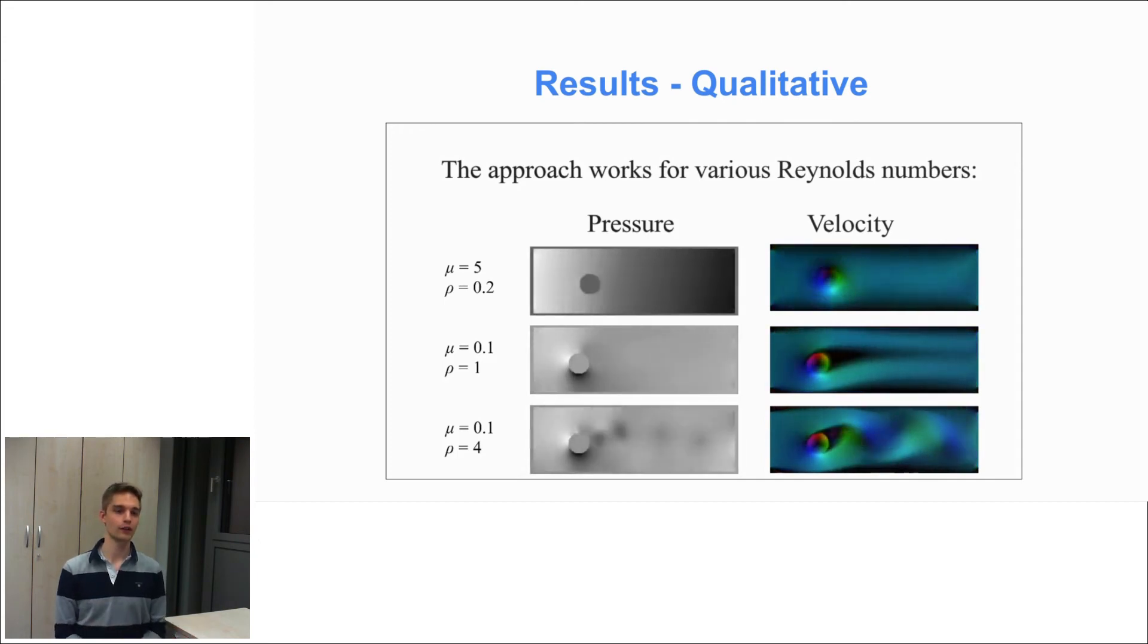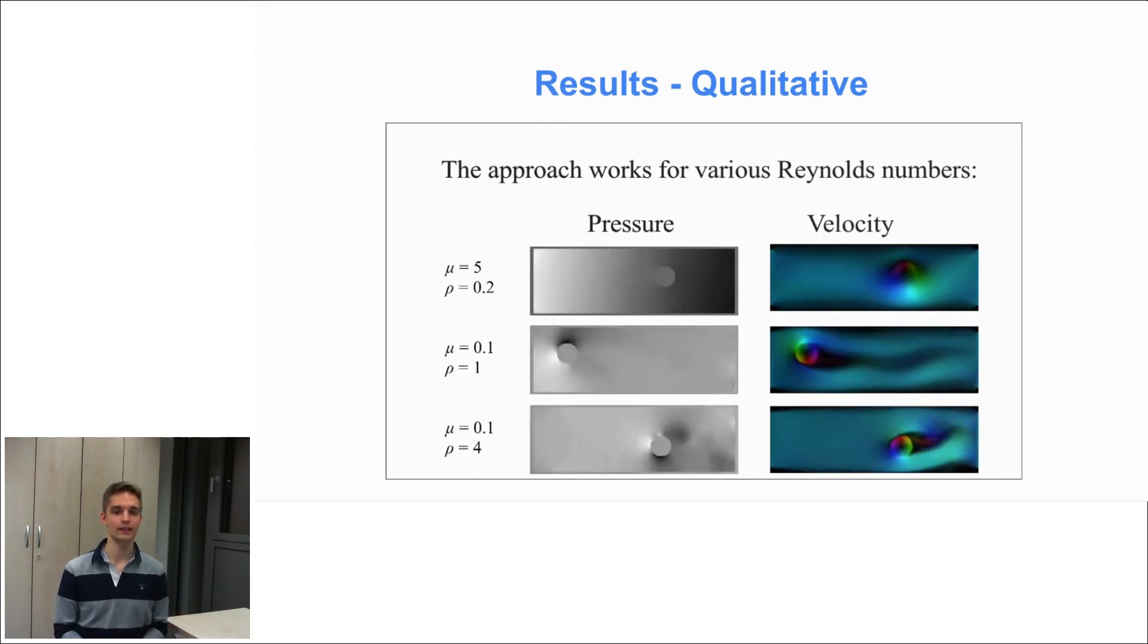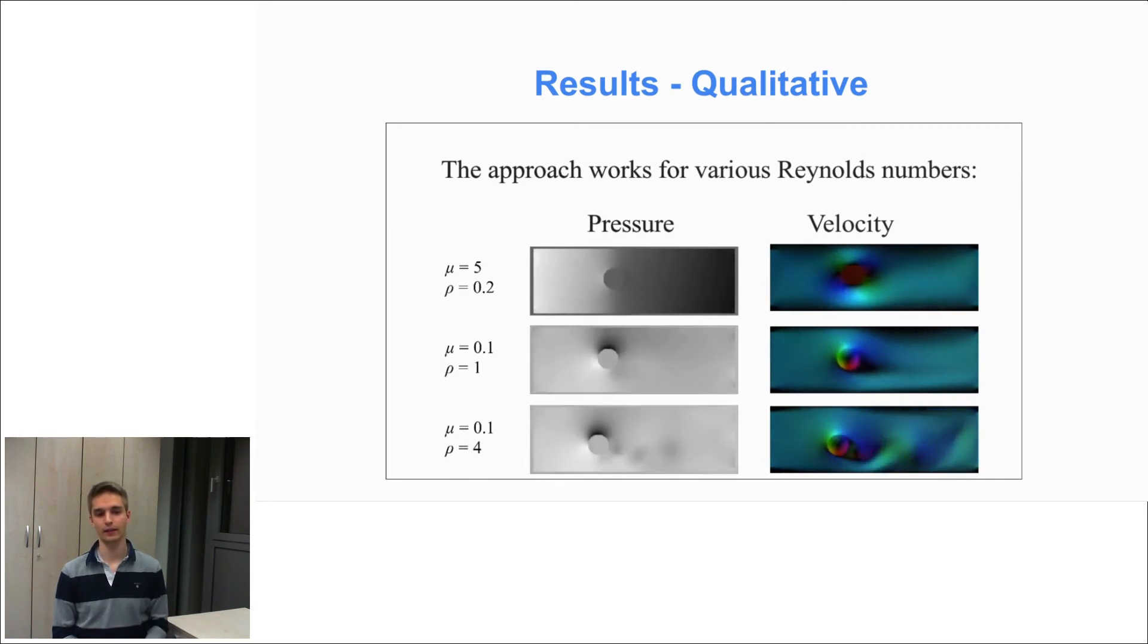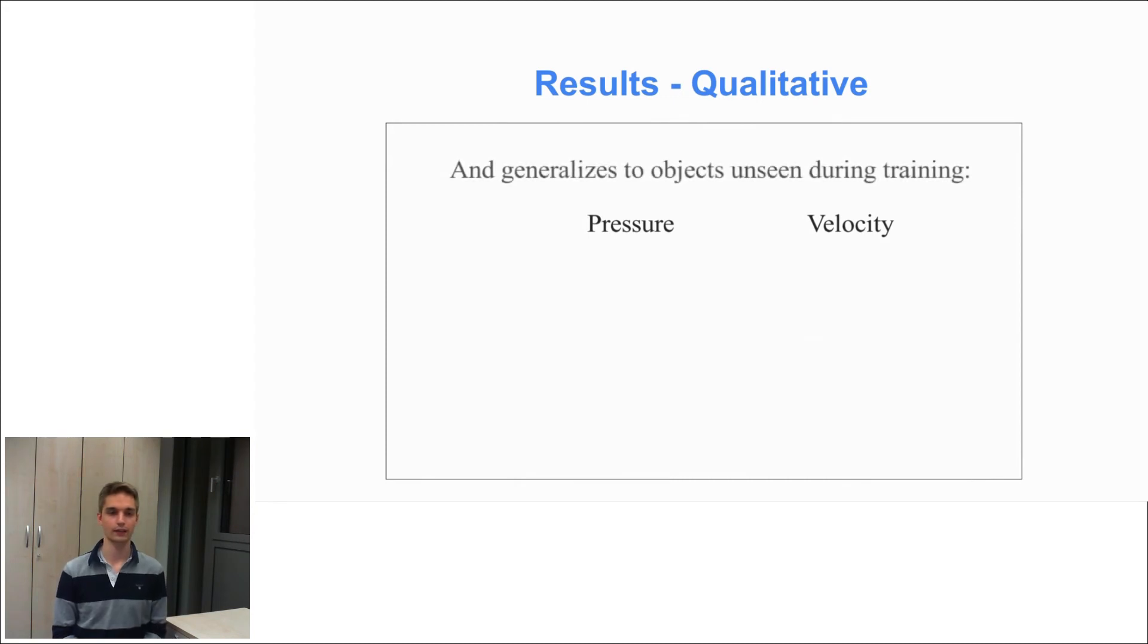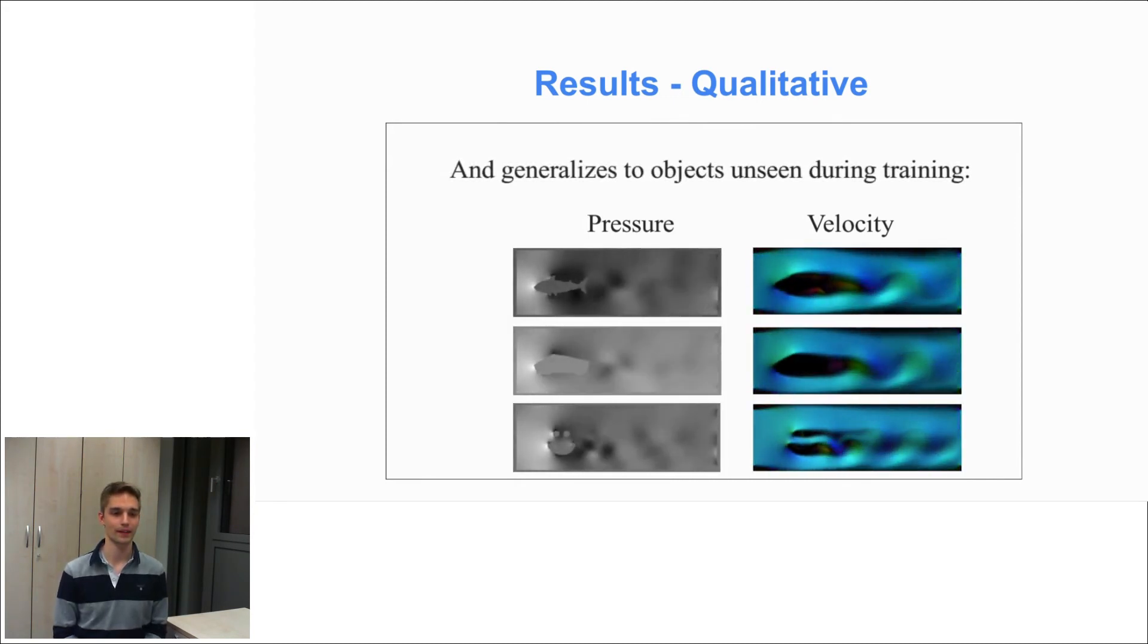Our approach also works for various Reynolds numbers. So we tested out different viscosities and fluid densities. And the Reynolds number is really characteristic for the dynamics of the fluid. As you can see here, we correctly managed to match these dynamics.